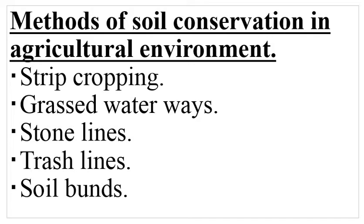The first method is strip cropping. Strip cropping involves planting of various crops where you combine a crop that has poor ground cover with one that has a good ground cover.